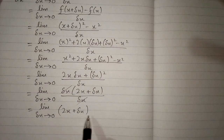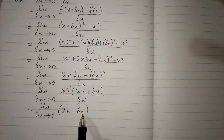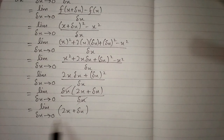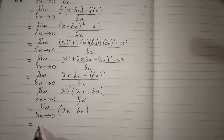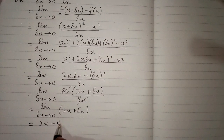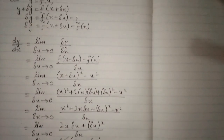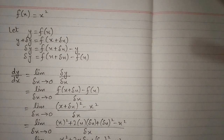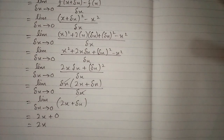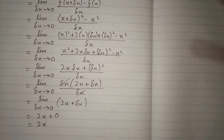Now we apply the limit by putting delta x equal to 0. So we have 2x plus 0, which equals 2x. Therefore the derivative of f of x equals x squared is 2x by first principle.